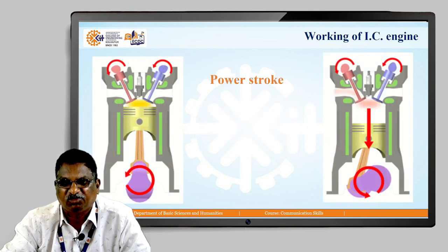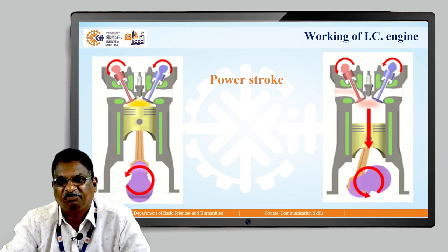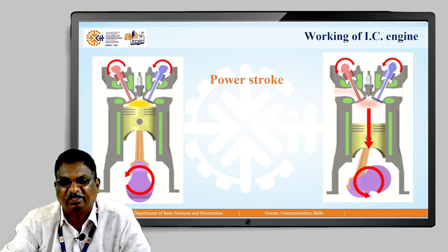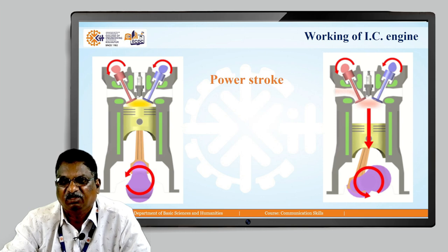In the power stroke operation, on the left-hand side diagram the air-fuel mixture is compressed — shown in yellow color — and both valves are closed. On the right-hand side diagram, the spark plug is ignited and the air-fuel mixture is burned, generating a high amount of pressure in the downward direction; therefore, the piston is forced downward. This is called the power stroke.